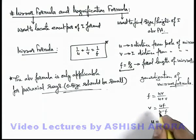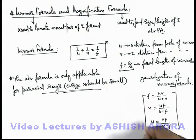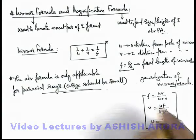If object distance is required and image position is given, it can be used as u = vf/(v-f). But in all these relations of generalization or this formula, you must also keep one thing in mind.